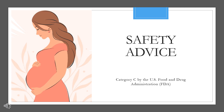Safety Advice. Glyburide, also known as Glibenclamide, is currently classified as Category C by the U.S. Food and Drug Administration (FDA) for use in pregnancy.